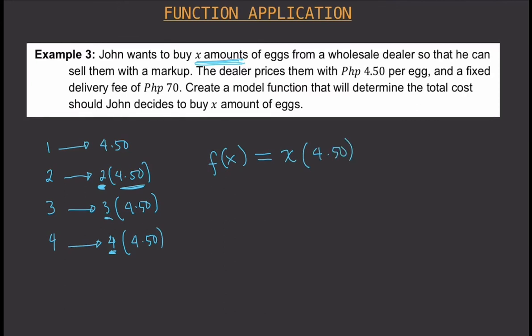So this will be the payment for x number of eggs. But then you have to pay a delivery fee of 70 pesos, so you need to add 70 pesos in your function, and that will give you the total cost if you bought x amount of eggs.